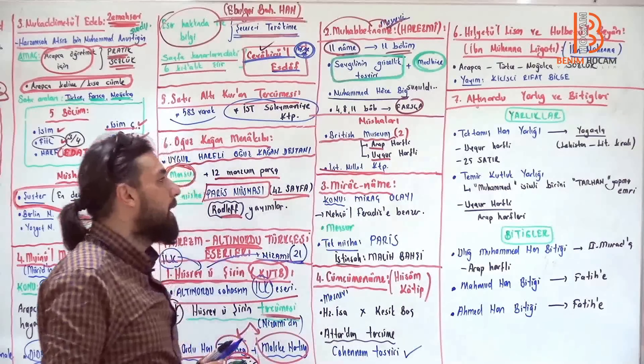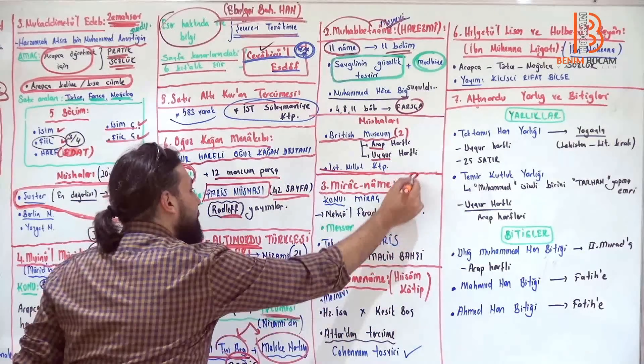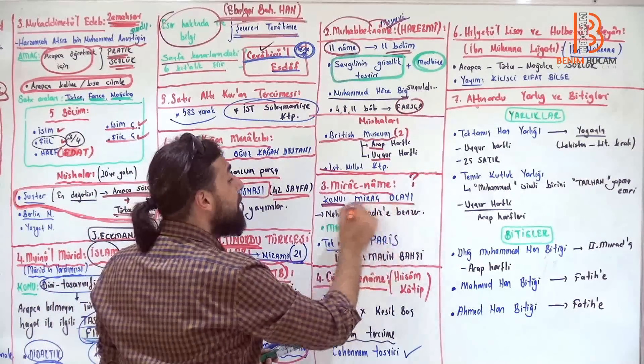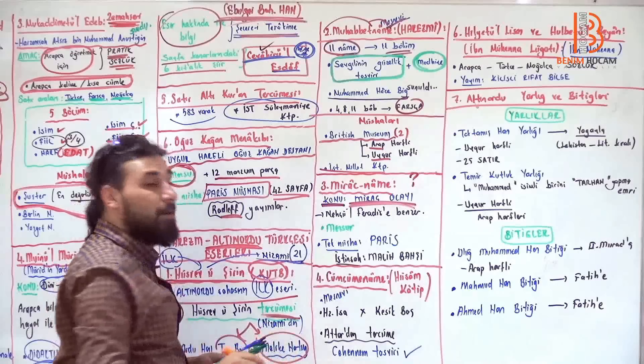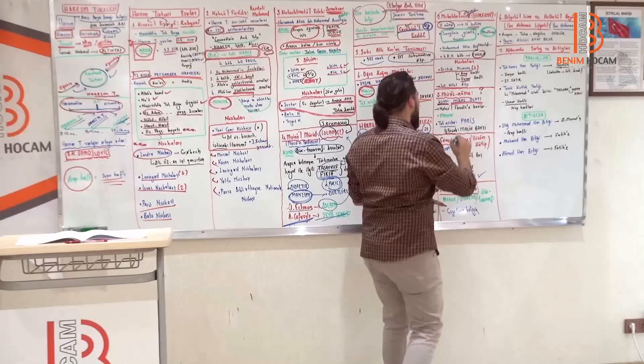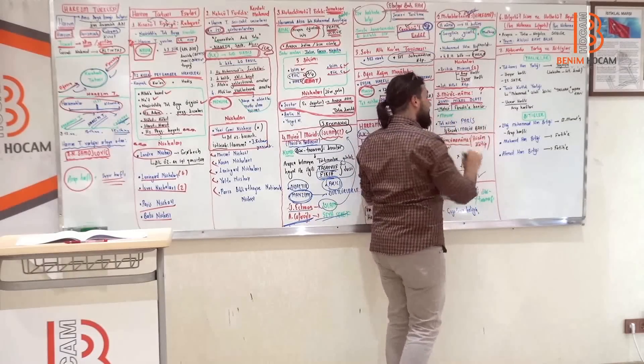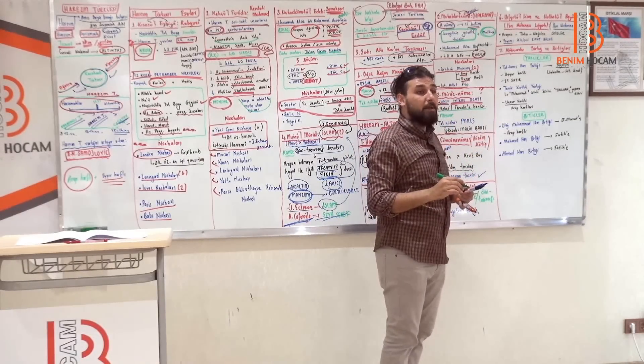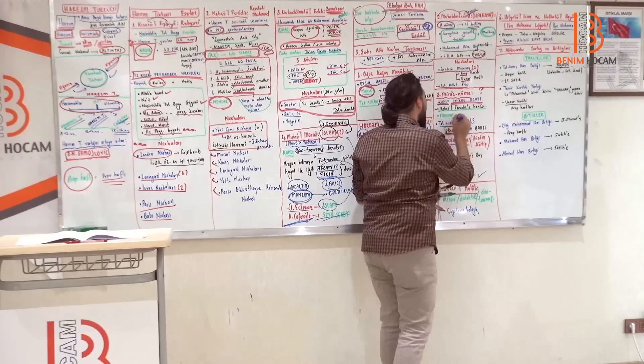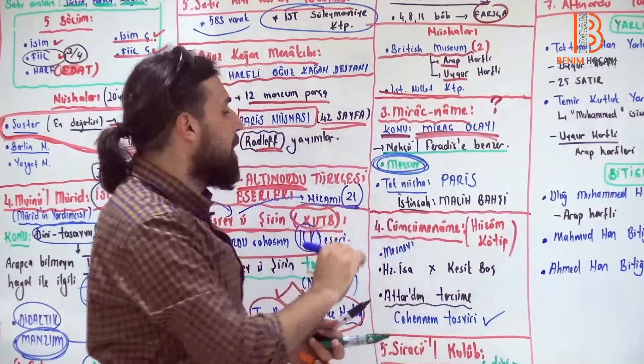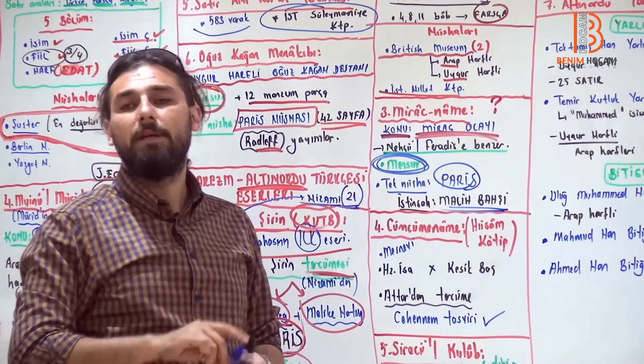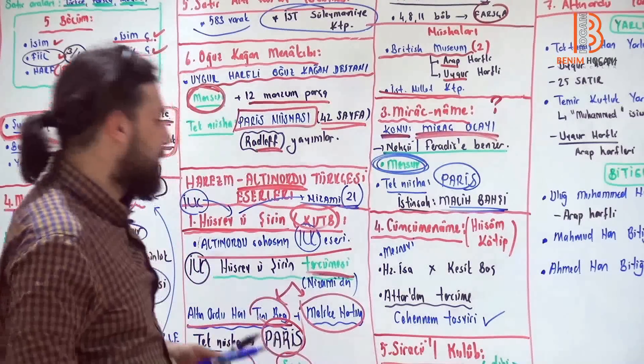İstanbul Milli Kütüphanesi'nde de vardır. Yazarı bilinmeyen, genelde kaynaklarda 10 numara geçen ama yazarı bilinmeyen, konusu Miraç olayını anlatan Miraçname. Miraç peygamberimizin göğe yükselişidir. Bu Miraç'ı anlatır. Ve Neçül Feradis'e benzer, hatta bazılar der ki Neçül Feradis'ten çeviridir derler. Neçül Feradis'in özetidir derler. Ve mensur bir eserdir. Düz yazıdır. Tek nüshası Paris'tir. Malik Vahşi arkadaşlar istinsah eden kişidir.